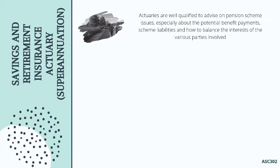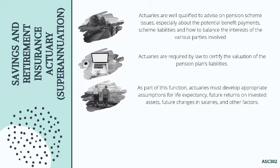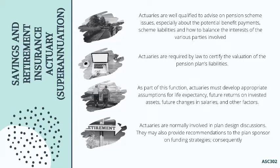The third type is saving and retirement insurance actuary, or superannuation actuary. Actuaries are well qualified to advise on pension scheme issues, especially about the potential benefit payments, scheme liabilities, and how to balance the interests of the various parties involved. Actuaries are required by law to certify the valuation of pension plan liabilities. As part of this function, actuaries must develop appropriate assumptions for life expectancy, future returns on invested assets, future changes in salaries, and other factors.